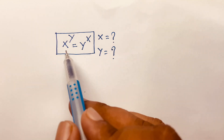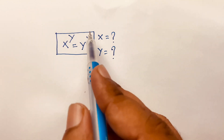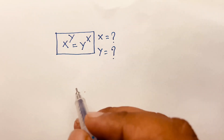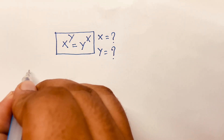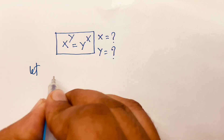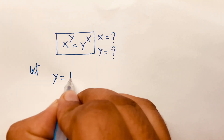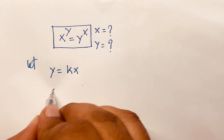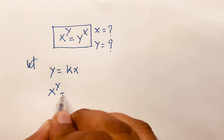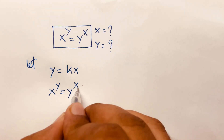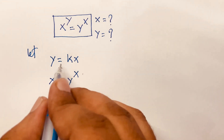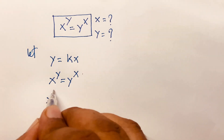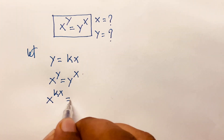Hello everyone. How to solve x to the power y is equal to y to the power x — we'll find out the values of x and y. First of all, let y be equal to kx. Then our equation is x to the power y is equal to y to the power x. Since y equals kx, we can say x to the power kx is equal to kx bracket to the power x.